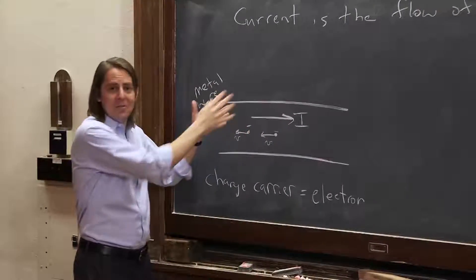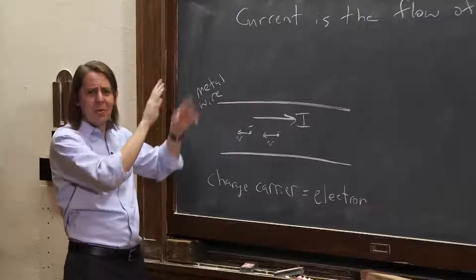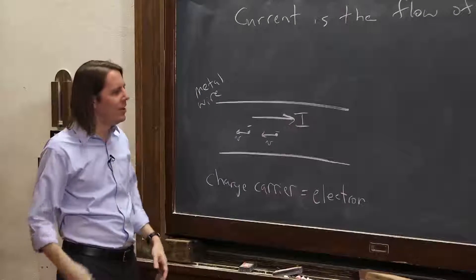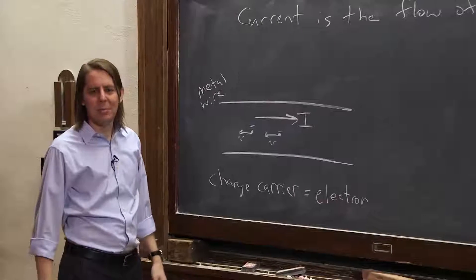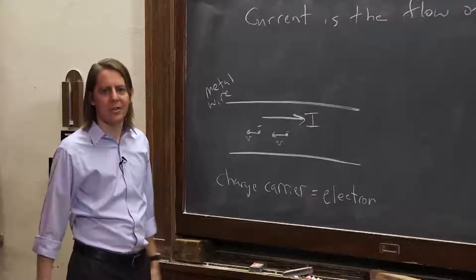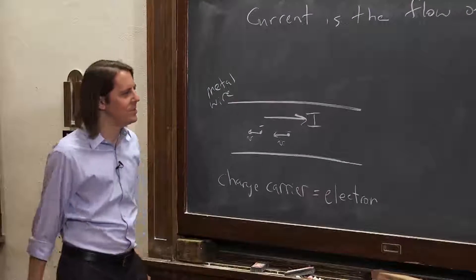So the electron should be positive, right? If we wanted to have a nice, simple world with not so many negative signs flying around, back in the 1700s, we should have made the electron be positive. But it's stuck. It's negative. All this time, we've never changed it.